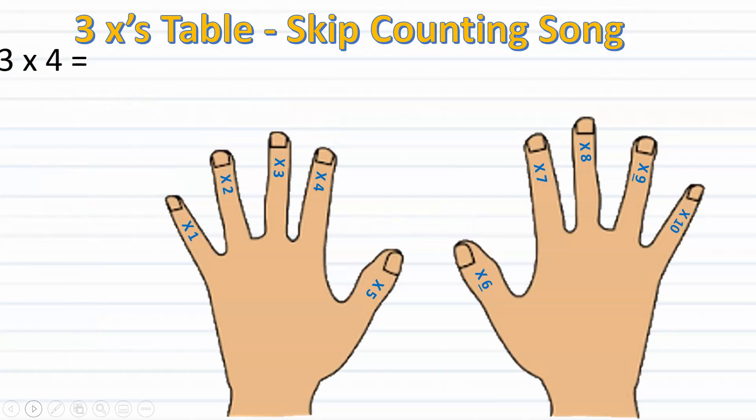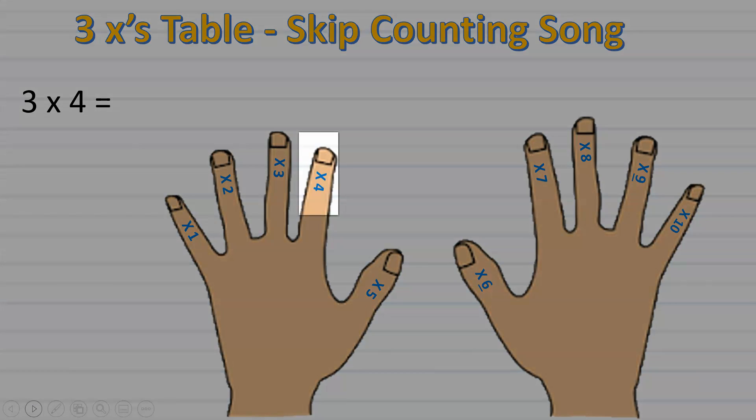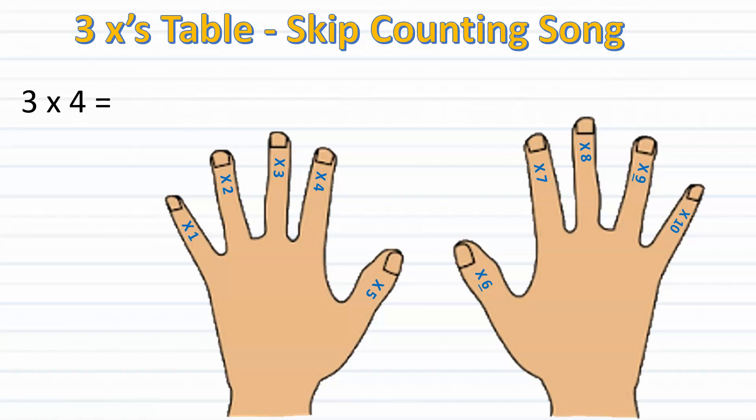For our next problem we will solve three times four. Keeping in mind since we're skip counting by threes we're going to stop at our fourth finger. So let's begin. Three, six, nine, twelve. Stopping at twelve. So therefore I know that three times four equals twelve.